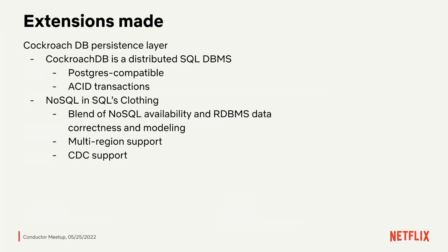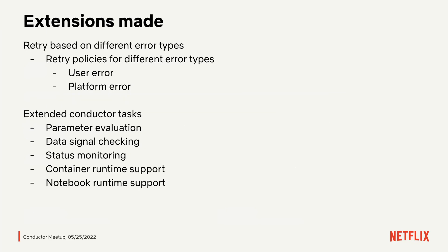We also made multiple extensions. One is to implement the CockroachDB persistence layer. CockroachDB is a distributed SQL database that provides transaction support, multi-region support, and change data capture features as well. We are quite happy with it in terms of performance. We also made some other smaller changes and extensions — for example, different retry policies for different error types like user errors or platform errors. User error means the business logic caused the failure; platform error means the compute engine or other platform had trouble, like the Spark cluster rotating or going down. We categorize them differently and treat them accordingly. We also extend the Conductor tasks to add features for our own use cases like parameter evaluation and signal checking.